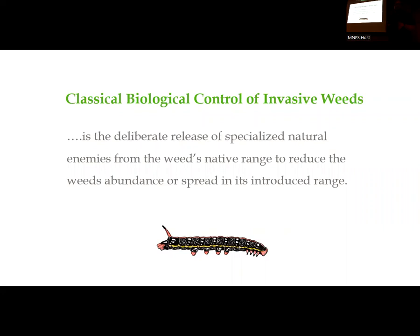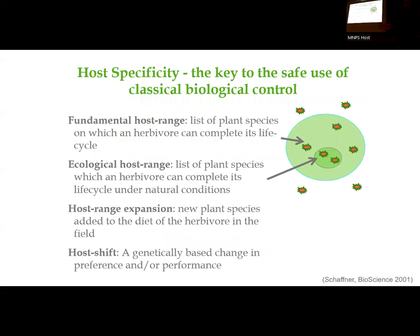I wanted to cover the definition of classical biocontrol, because there are a lot of conversations about bugs that eat weeds, or sheep that eat weeds — but sheep are not biological control. Classical biocontrol is the deliberate release of a specialized natural enemy from the weed's native range that reduces the weed's abundance or spread in its introduced range. These are species that have evolved with these target plants and are very host-specific, not generalist insect feeders from North America.